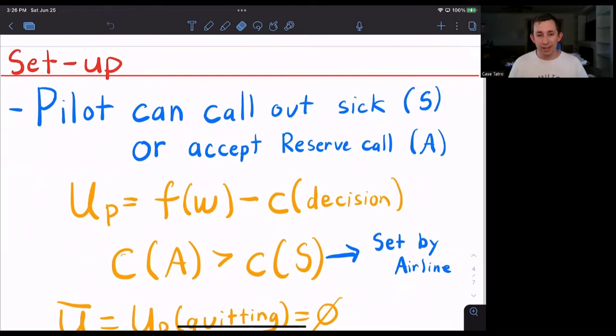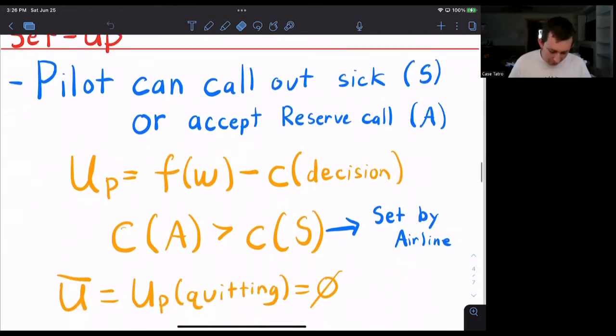We're going to pretend that the pilot is sitting at home when they get that call, and they can either choose to call out sick, which is S, or accept that reserve call. Now the utility for the pilot, U sub P, is going to be a function of their wage, F of W, minus some cost of their decision. The cost of their decision is set by the airline; it's not something pilots have control of.